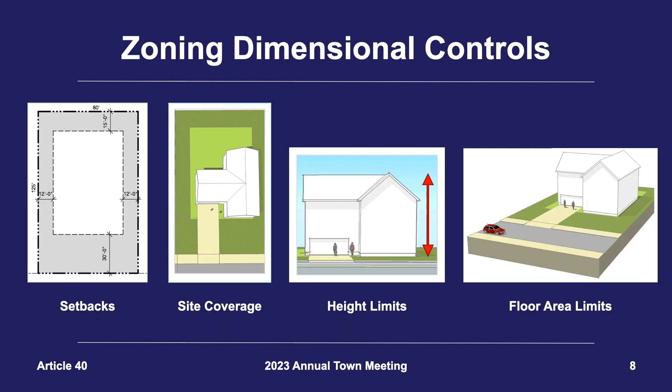There are a number of dimensional controls that are often used in residential zoning, such as setbacks — how far must a house be from the front, side, and rear lot lines; site coverage — how much of the lot can be covered by buildings; height limits — how tall can the house be above the average natural grade; and floor area limits — how large can a house be in proportion to the size of the lot on which it resides.